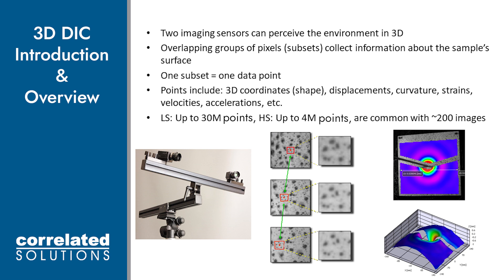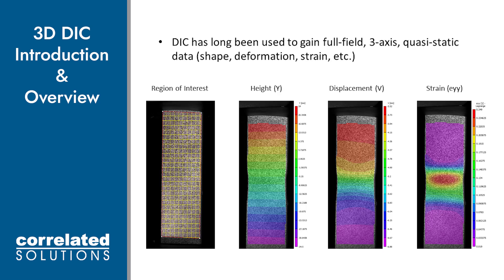Currently, low-speed cameras can have up to roughly 30 million points in an image and high-speed cameras can have up to about 4 million points in an image. We aim to get about 200 images per test. For example, if we take a series of images of a sample undergoing tensile deformation, we can call the first image in the sequence the reference image. Each subsequent image will be compared to the reference image to detect motion of the speckle pattern using subsets.